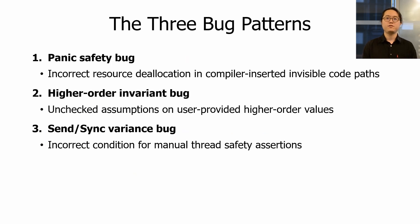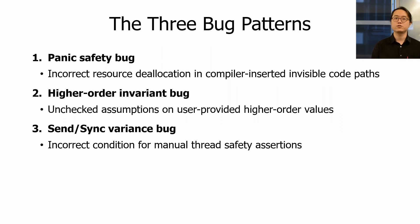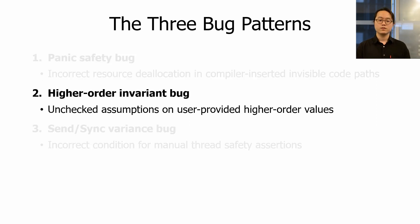Let me explain the three bug patterns. The first is the panic safety bug, caused by conflict between manual resource handling in unsafe Rust code and automatic resource handling in invisible code paths that handle exceptional program states. The second is the higher-order invariant bug, caused by unchecked assumptions on user-provided higher-order values. The third is the send-sync variance bug — Rust thread safety is managed by two traits, send and sync, and this bug happens if a generic type specifies incorrect conditions for its type parameters. Due to time limitations, we will focus on the second pattern: higher-order invariant bug.